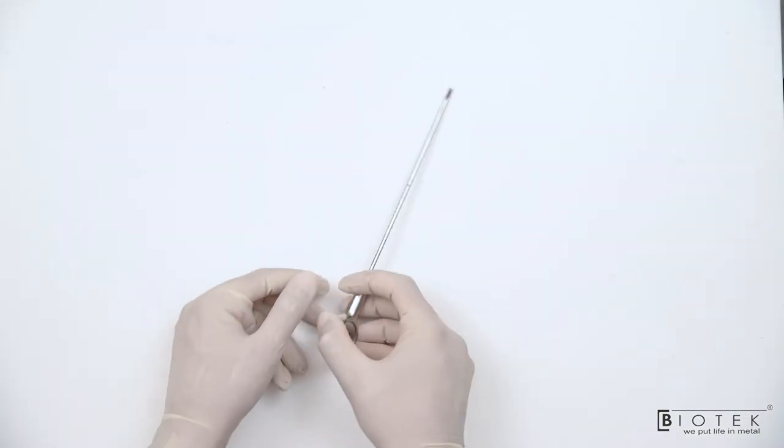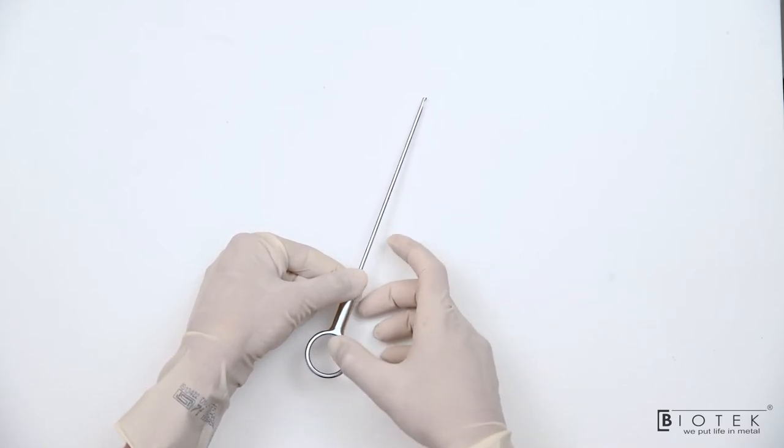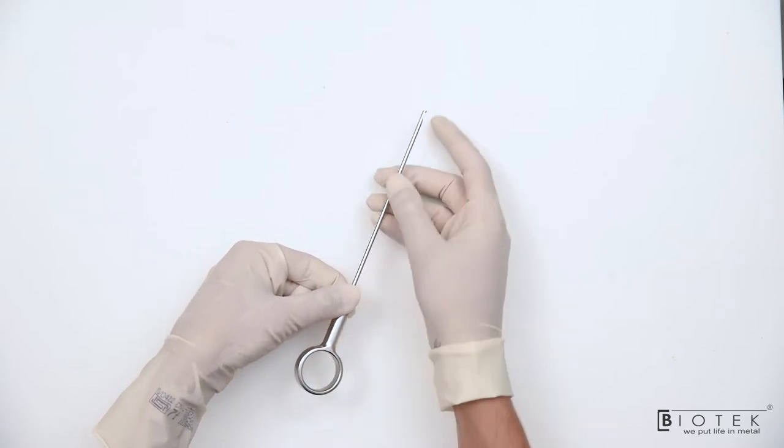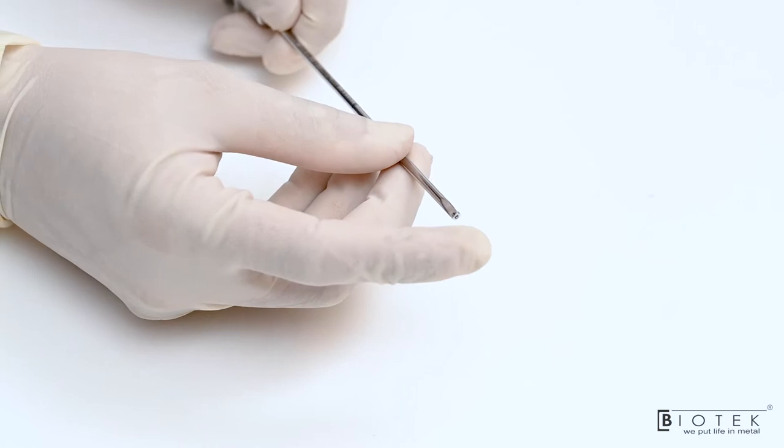This is knot pusher device. It is used to pass sliding or locking sutures. This is for the thumb and the tip is blunt. If tip is sharp it can damage the suture material.